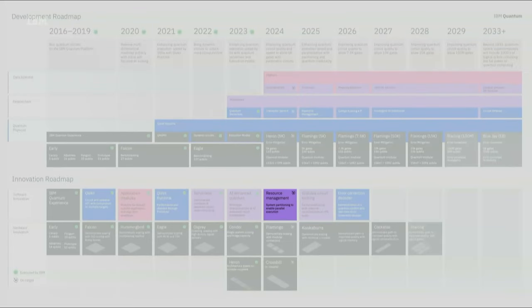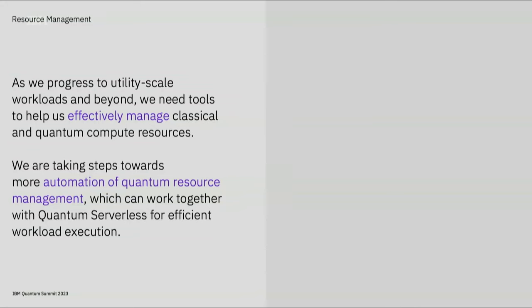Thank you, David. So this morning, you heard about the progress on our development roadmap with Qiskit patterns and quantum serverless enabling managed execution of workloads. In this section, I want to show you the next evolutions of quantum serverless and how we're enabling automation for more efficient resource management as part of our innovation roadmap. As we move towards utility-scale workloads and beyond, we need tools that help us effectively manage and get the most out of both classical and quantum compute resources. We'll especially need to rely on more automation to help us select the best quantum resources for a particular workload.